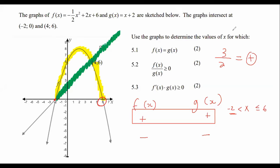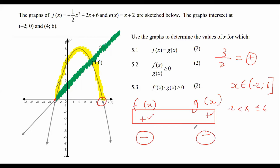Some of you want set builder notation. If we use set builder notation, that's going to go like this: X is an element going from minus two up to positive six, where positive six is included. So we've now looked at the scenario where both graphs are positive, but we also need to look where both graphs are negative, because that is also an area we need to examine.